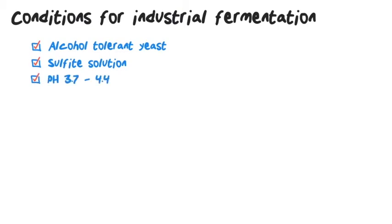So what are the conditions for industrial fermentation? You need alcohol tolerant yeast, Saccharomyces ellipsoides, sulfite solution as a source of sulfur dioxide, particularly for wine because bacteria is everywhere and they will turn the wine into vinegar overnight. They have to be killed. A pH of 3.7 to 4.4 to prevent pathogen growth but not too low that it denatures your enzymes.